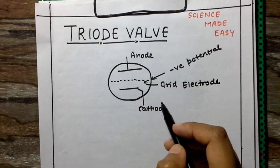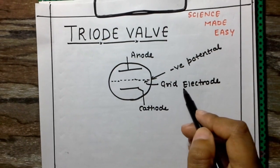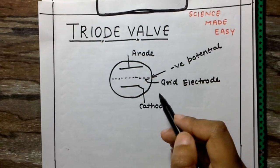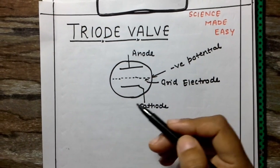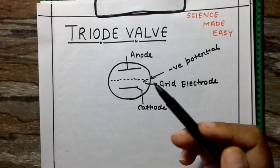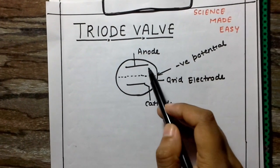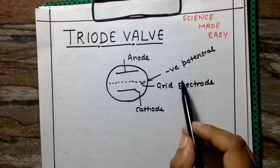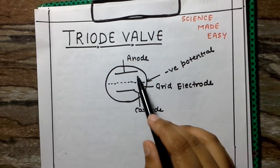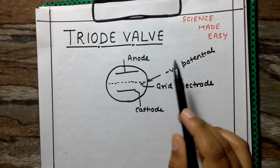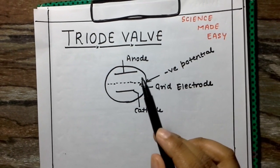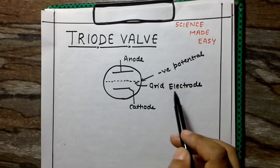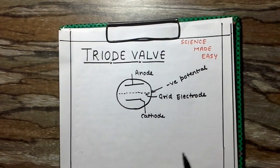As we increase the negative potential on the grid, more and more repulsion is experienced by the electrons, and fewer electrons reach the anode, so the plate current decreases. At some value of this negative potential, no plate current flows in the circuit. That negative potential is known as the cutoff potential.